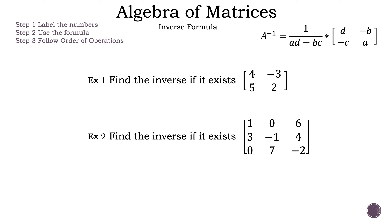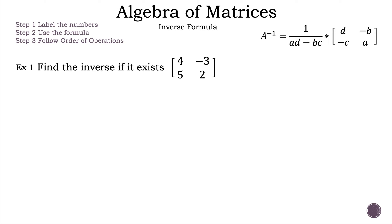Now let's take a look at the examples. Step 1: label the numbers. Step 2: use the formula. Step 3: follow the order of operations. Find the inverse, if it exists, of our 2 by 2 matrix where we have in the first row 4 and negative 3, and in the second row 5 and 2.